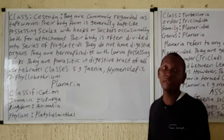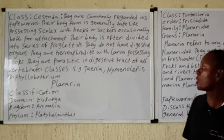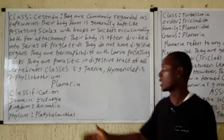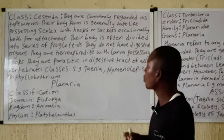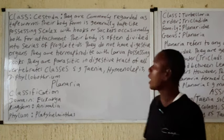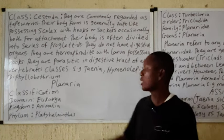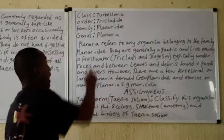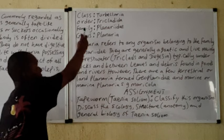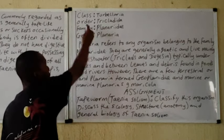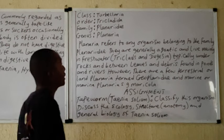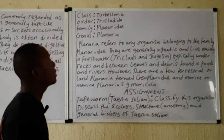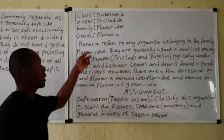We are going to take a representative of the phylum Platyhelminthes — we are going to look at the planaria. The classification is as follows: the domain is Eukaryia, the kingdom is Animalia, the phylum is Platyhelminthes, the class is Turbellaria, the order is Tricladida.